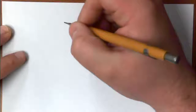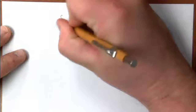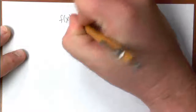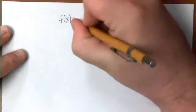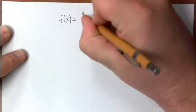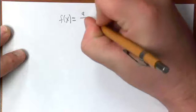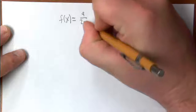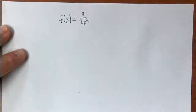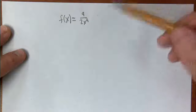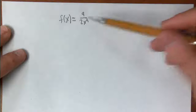All right, guys, I'm just going to answer a few quick questions here. The first question is f of x equals 9 over 2x to the 9th, and we need to find f prime. There are actually two general ways to go about doing that.